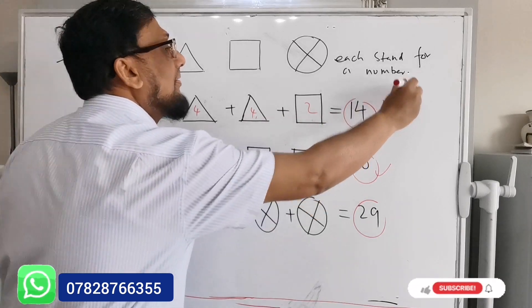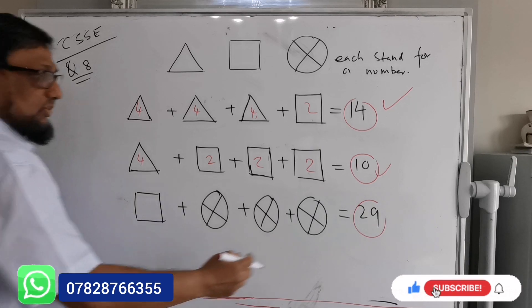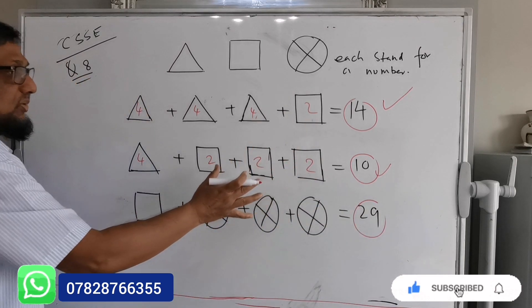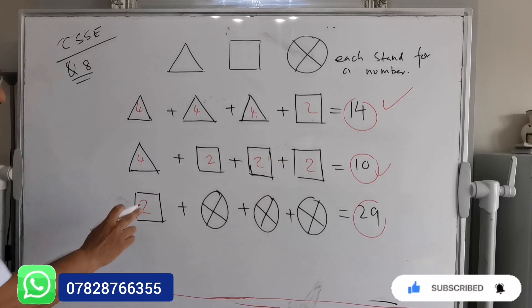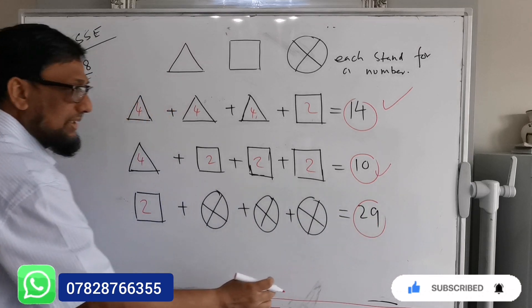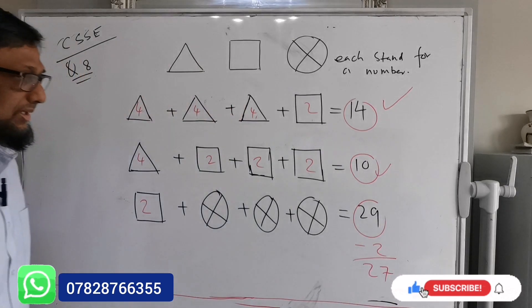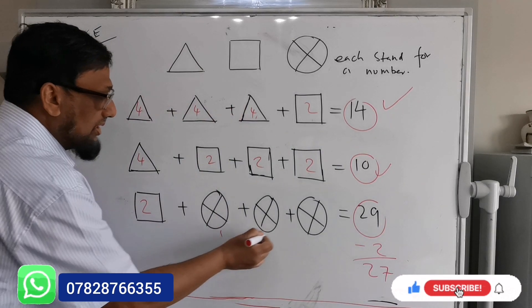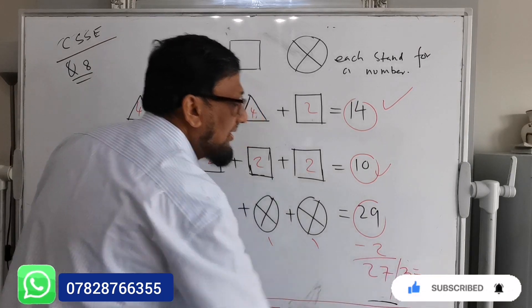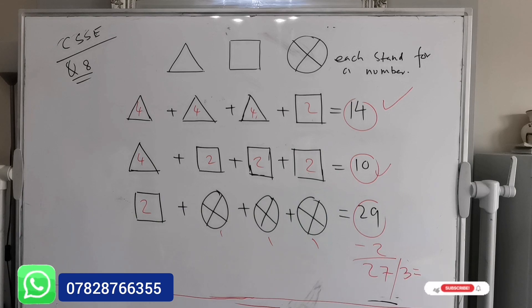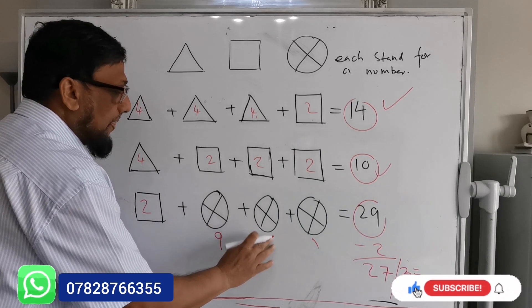Now what you're going to do: this one is 29, but we assume the square value is two. So I'm going to put here two. 29 take away two, which is 27. How many circles are there? One, two, three. So what you're going to do is divide by three. 27 divided by three, so it means this one will be nine, this one will be nine.